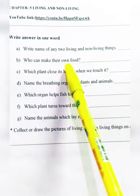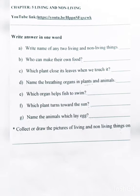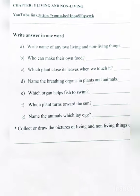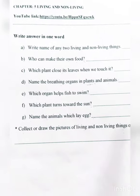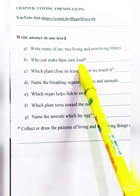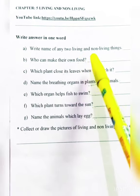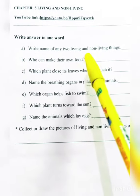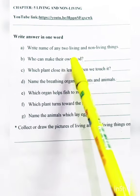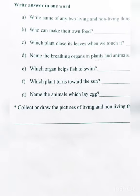Who can make their own food? Only plants can make their own food. We get vegetables from plants, so plants give us food. Only plants can make their own food.